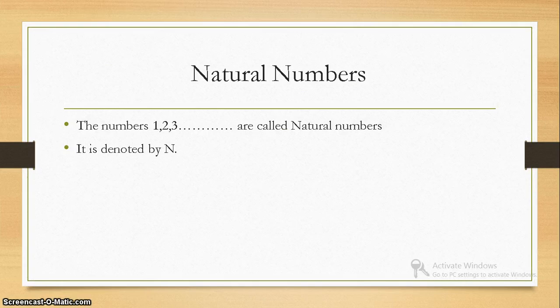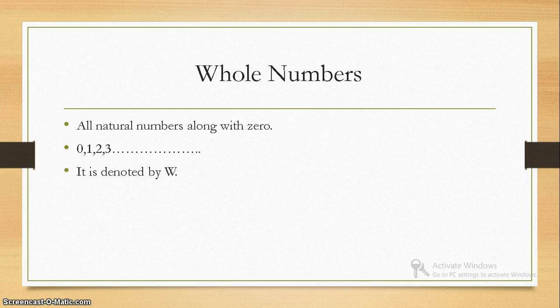First, we will see the different numbers in the number system. The first one is a natural number. The numbers 1, 2, 3 and so on are called natural numbers and it is denoted by N. You can see these are all positive numbers. What are whole numbers? Just consider the natural numbers along with 0 — this is known as whole numbers, denoted by W.